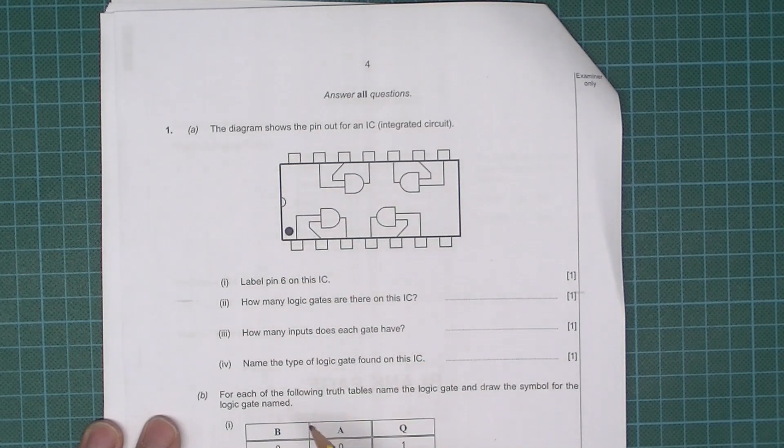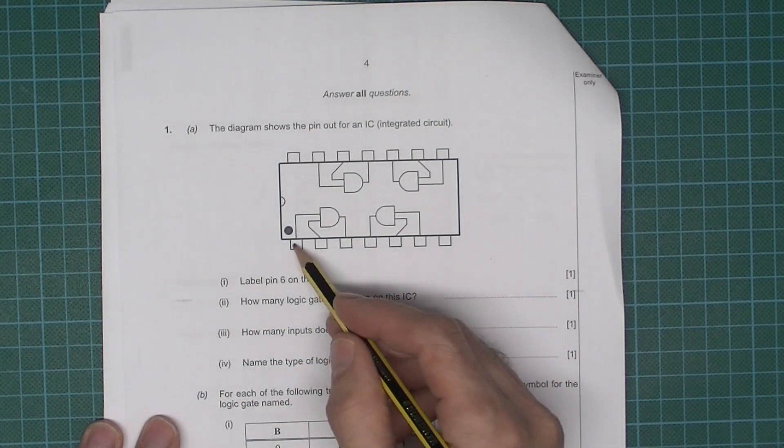You actually see this on most ICs, there's like a little circle there or recess or something, and that indicates pin 1.